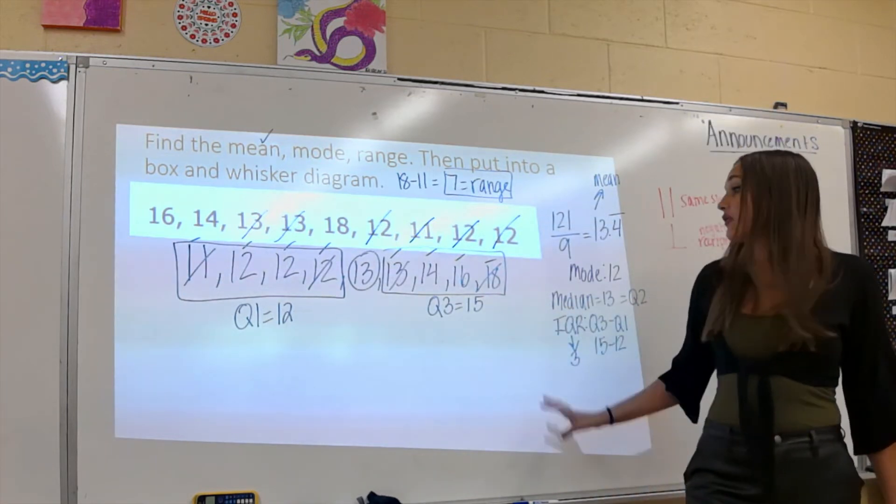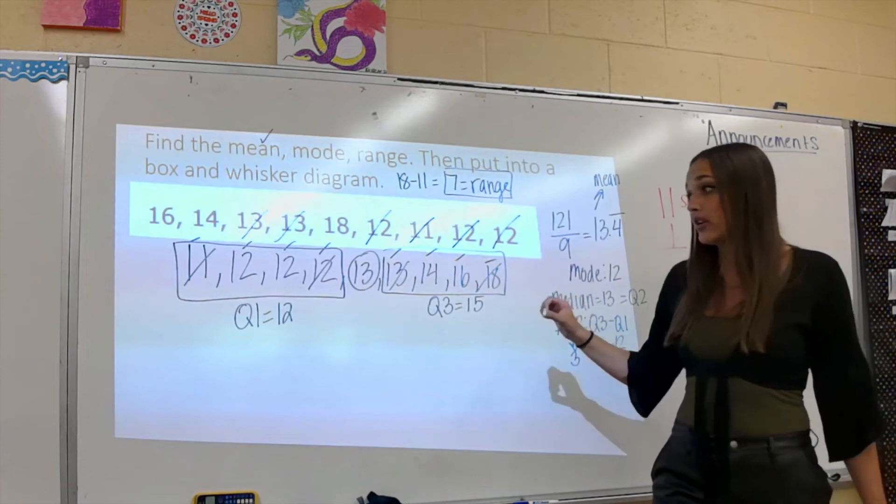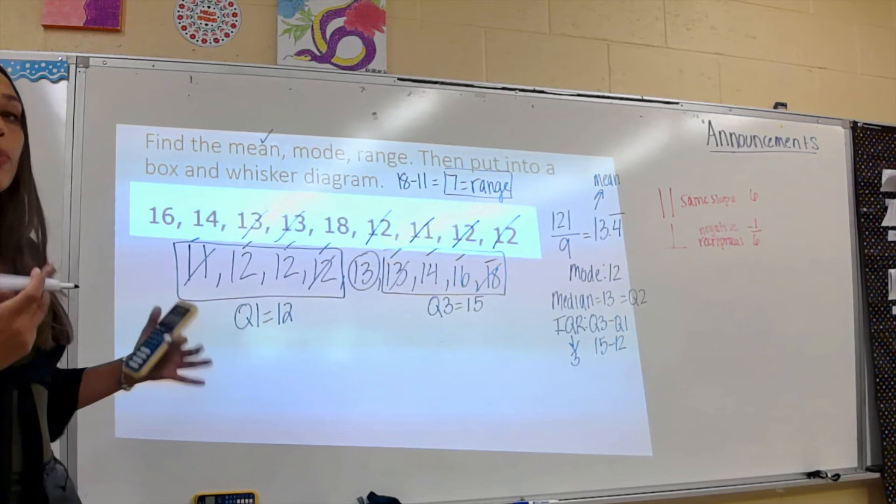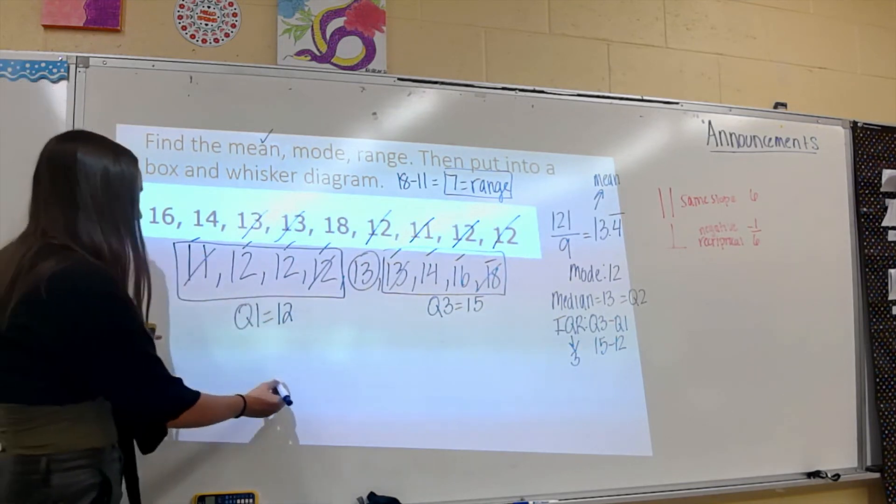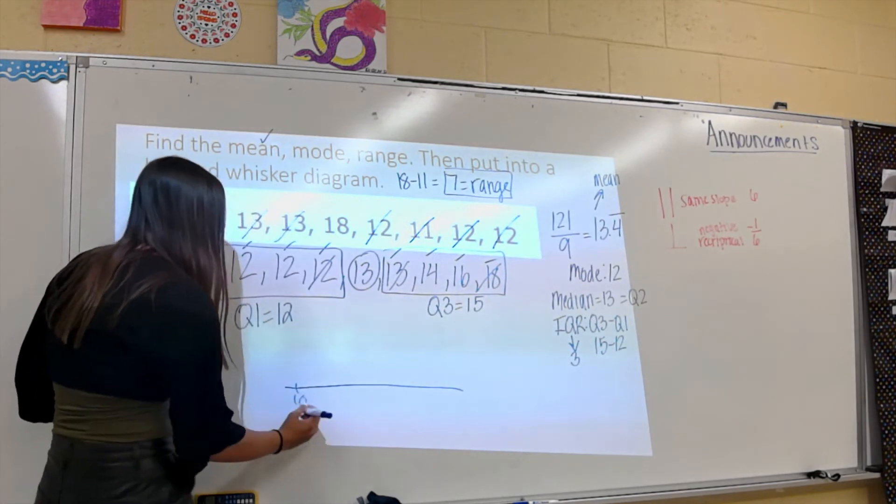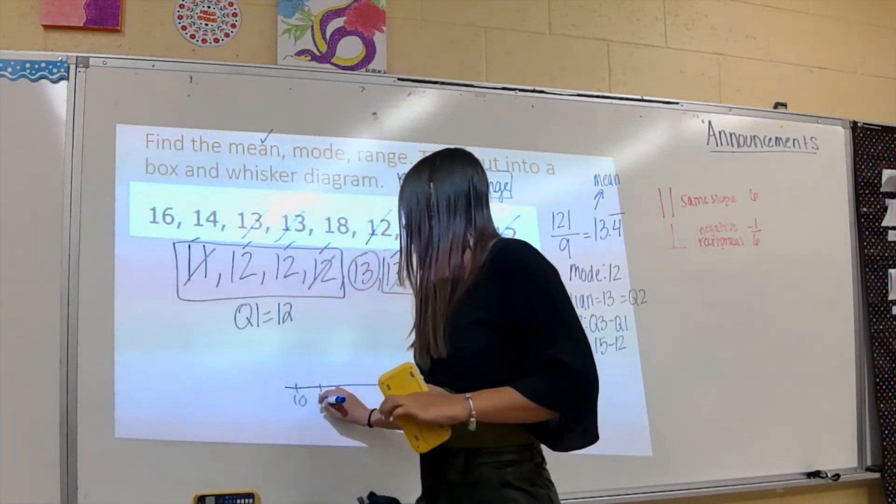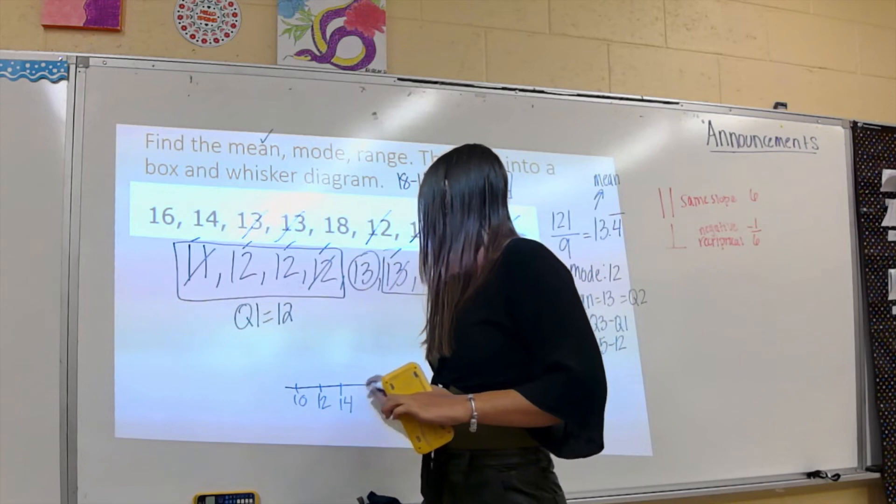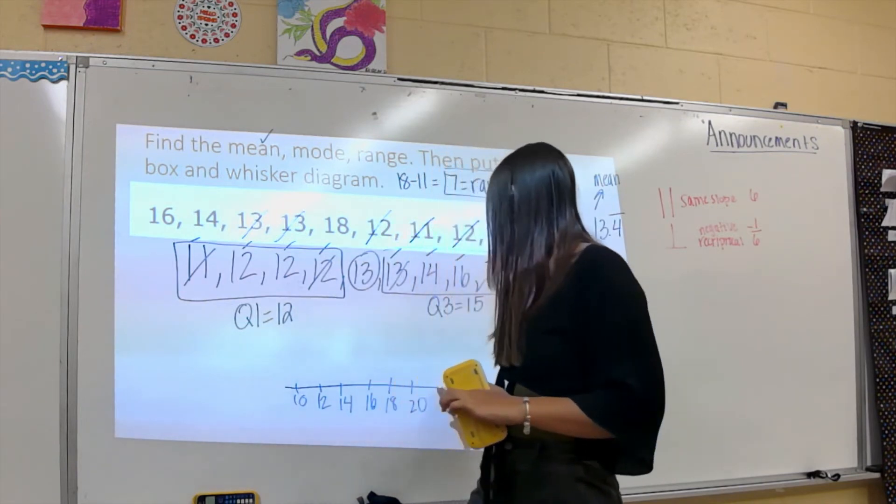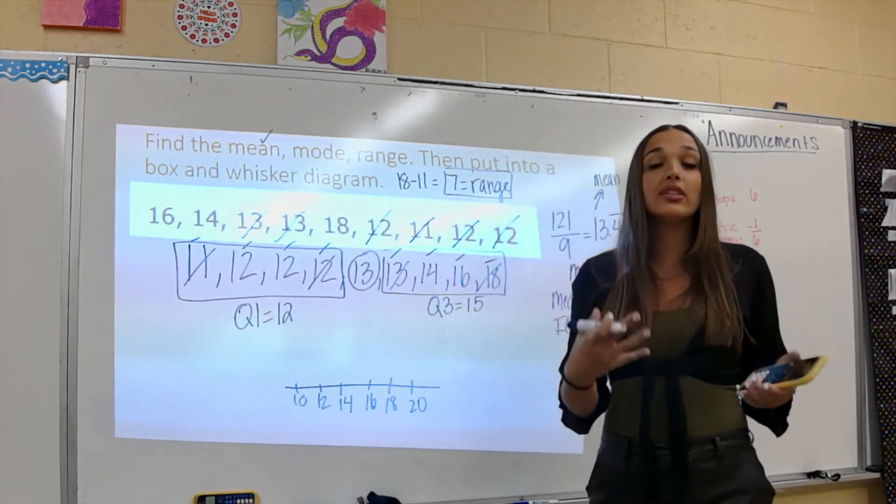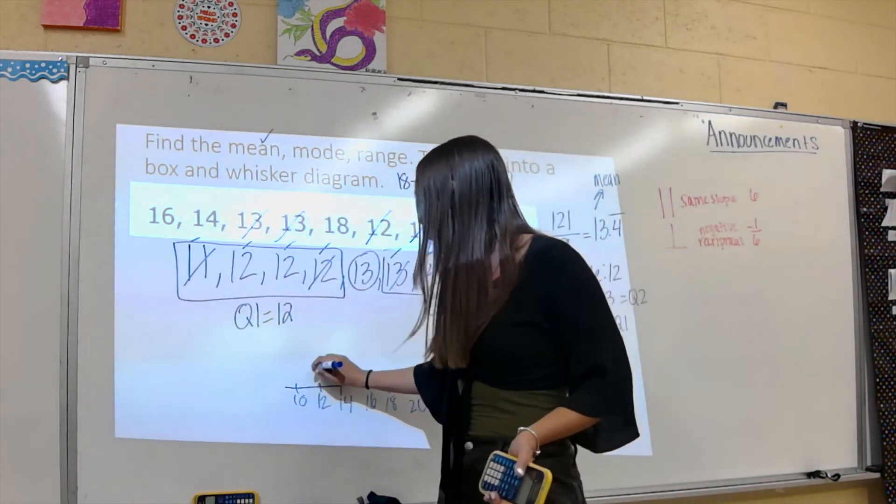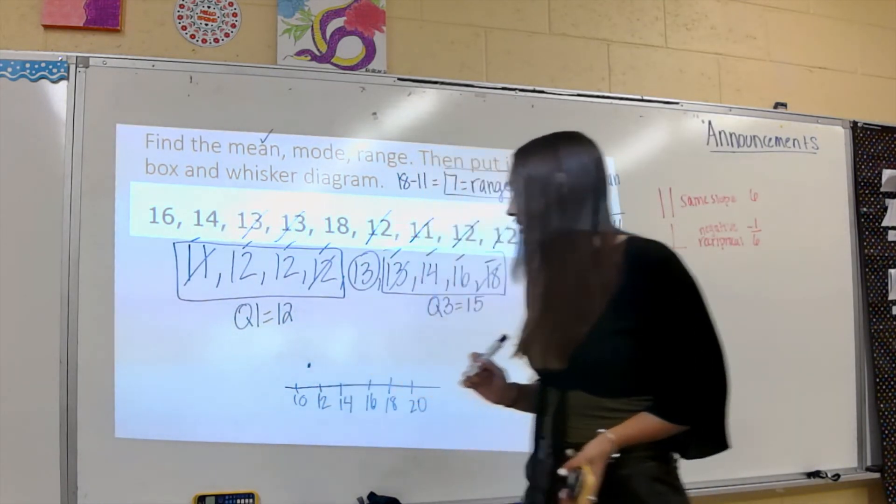Now that we have all this information, we are going to make our box and whisker diagram. All of this is going to be used to plug in. I'm going to look at all my numbers and go by two so it's not that long. So I draw my line here. I'm going to start with 10, then 12, 14, 16, 18, 20. Our first step is to always put our least value or minimum on here, which is 11, which is between these two. So I'm going to put a dot there.